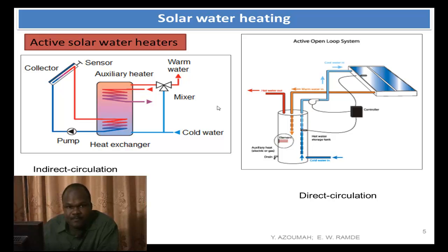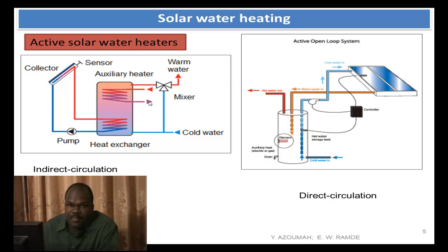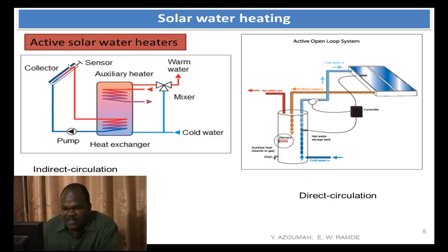So that's why we have the glycol loop, and then you have your water loop. The cold water comes into the storage tank, picks up the heat, and then you use it outside — with a mixer, you can mix the cold water and the warm water. And if you are not satisfied because there was a cloudy or rainy day and the solar didn't perform well, you have an auxiliary heater — it could be gas. The auxiliary heater comes to the rescue of the solar water heater when there is no sun. This is the indirect circulation.